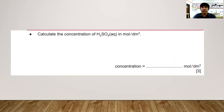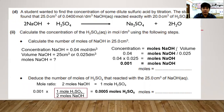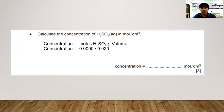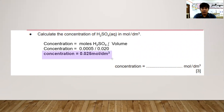Finally, calculate the concentration of H₂SO₄: moles = 0.0005, volume of H₂SO₄ = 20.0 cm³ = 0.020 dm³. Concentration = 0.0005 / 0.025 mol/dm³. That is the concentration of sulfuric acid used. That ends our session — thank you and see you for the next science lessons.